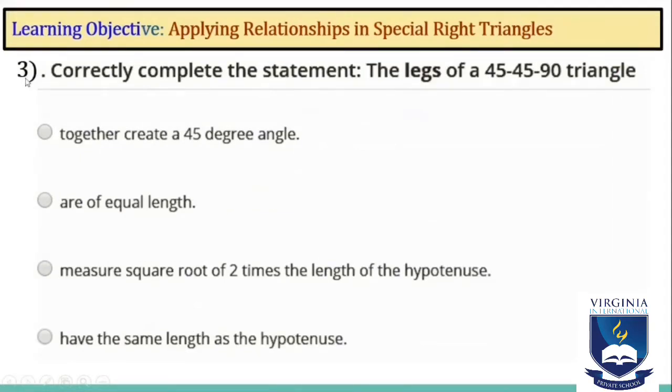Question number 3: Correctly complete the statement. The legs of a 45-45-90 triangle together create a 45-degree angle, are of equal length, measure square root of 2 times the length of the hypotenuse, or have the same length as the hypotenuse. The correct answer is that they are of equal length.